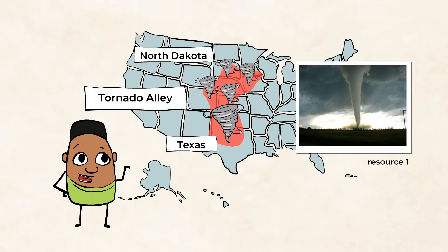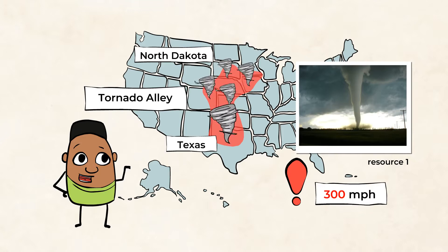They're super strong. Their winds can reach up to 300 miles per hour, which is strong enough to pick up and throw anything in their path, which can be incredibly dangerous.